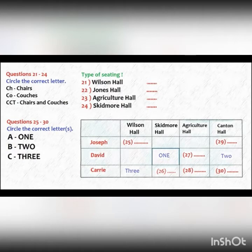You will hear a discussion between three students, David, Joseph, and Carrie. In the first part of the discussion, they will be talking about lounges in different school buildings on campus. First look at questions 21 to 24. Now listen to the first part of the discussion and answer questions 21 to 24.